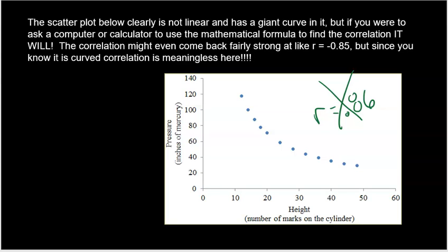Correlation is an awesome value that we're going to use more and more because this whole unit is looking at relationships between variables. R gives us a measurable way to understand that relationship — only if your two quantitative variables have a linear form. Make sure you meet all those conditions, and that's when you're allowed to talk about r. The next video is going to teach you how to use your calculator and Google Sheets to find correlation, so watch it if you need to.